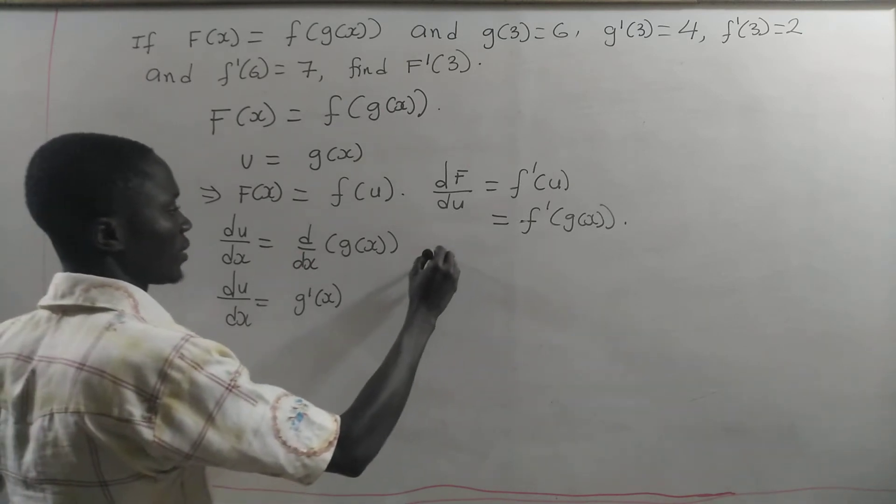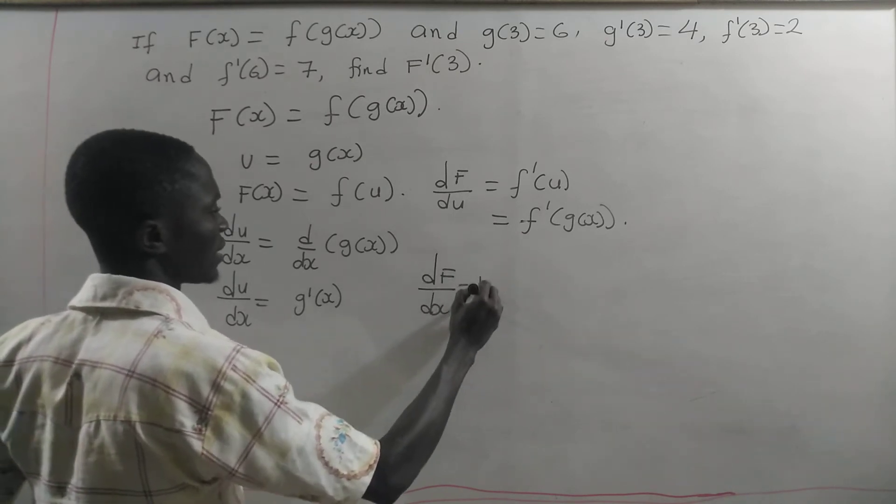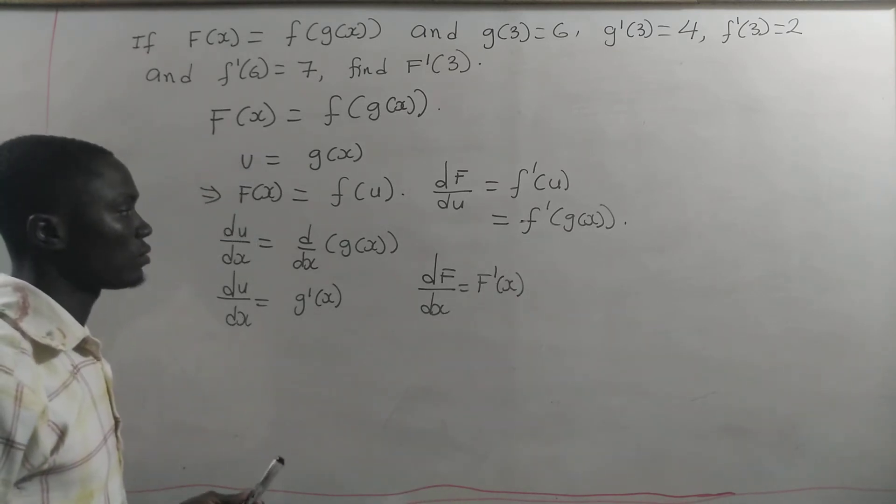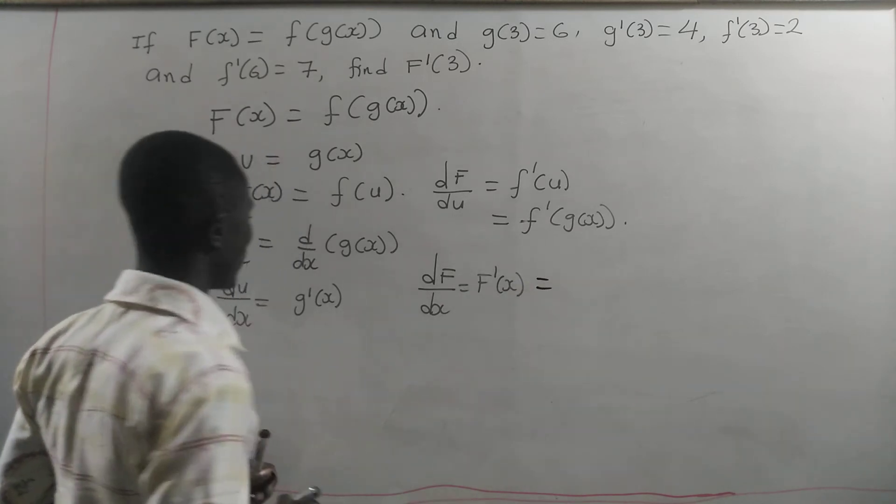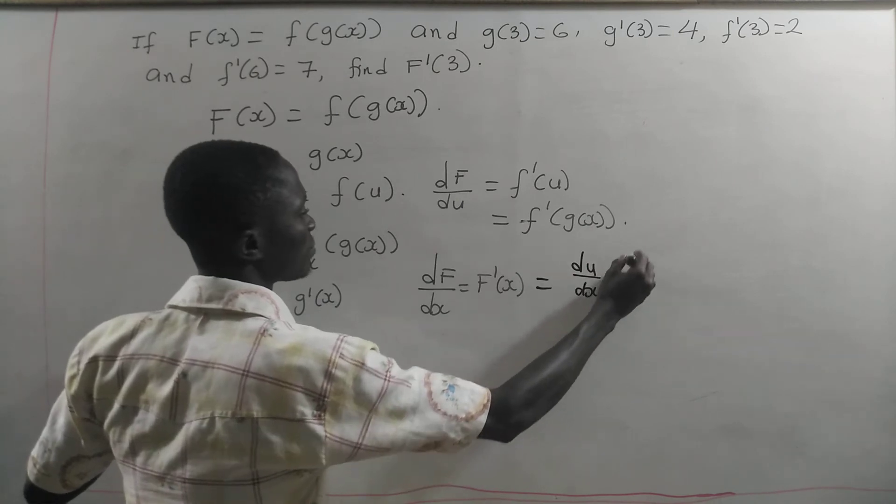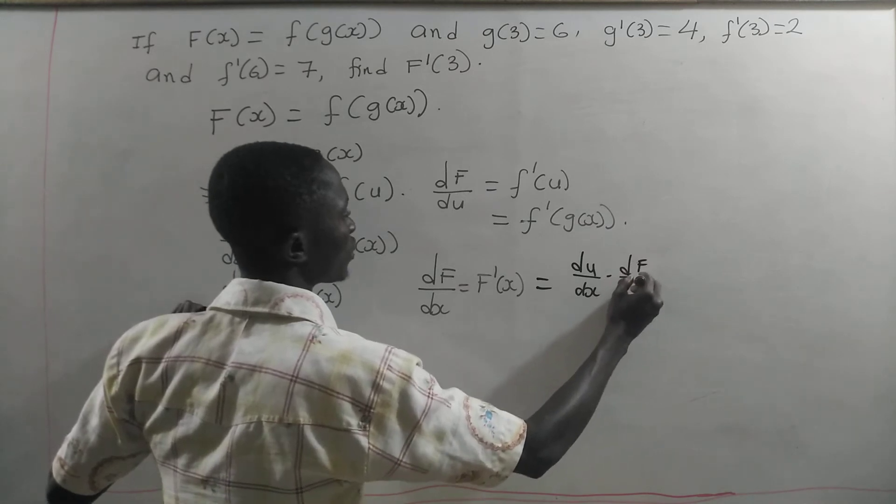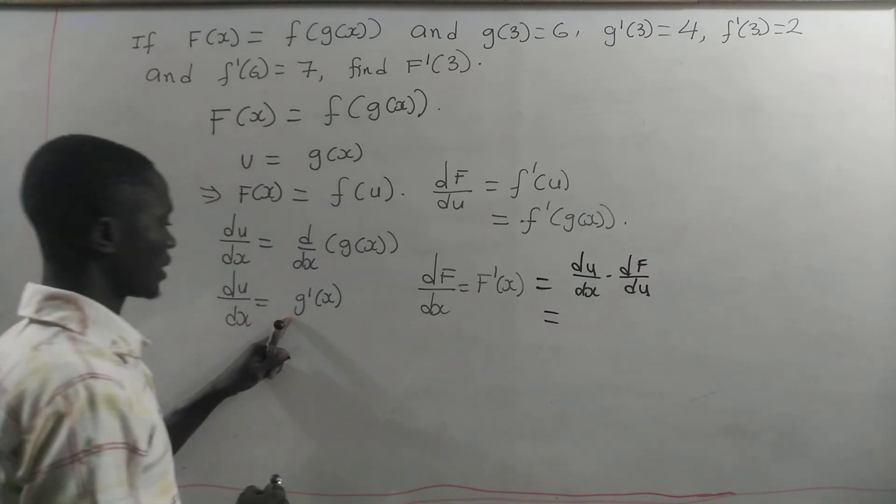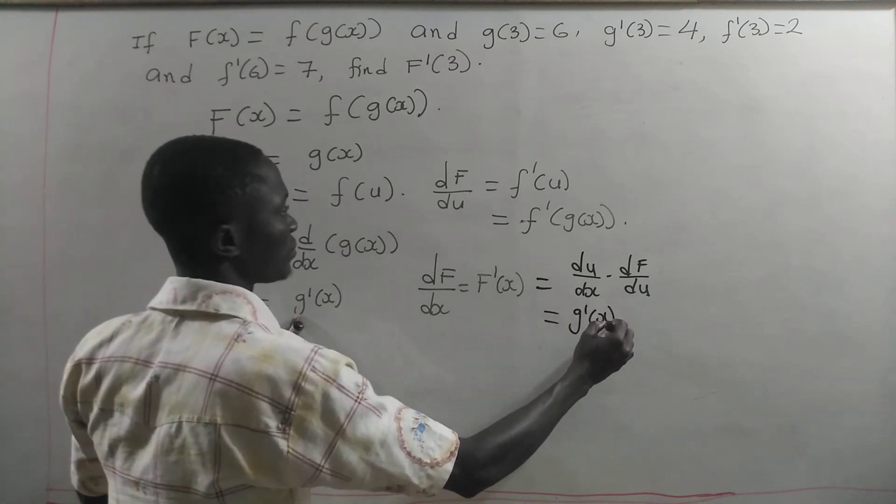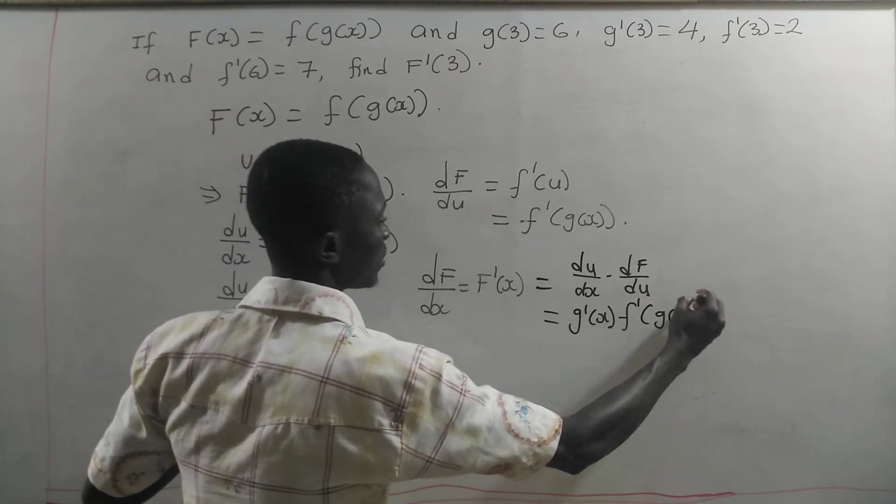What is the derivative of capital F with respect to x? That is F prime of x. From the chain rule, we are going to write the derivative of u with respect to x times the derivative of capital F with respect to u. And that will give us g prime of x times f prime of g of x.